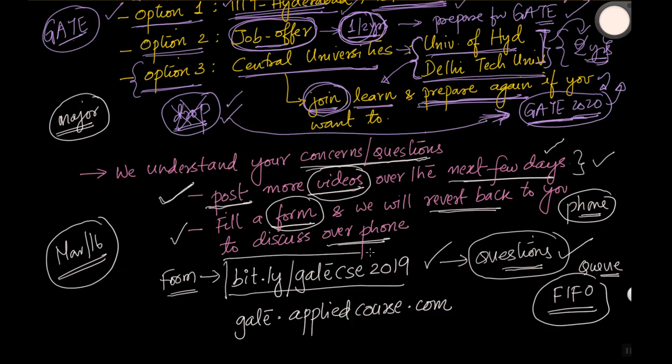So please go to this link, very simple link to remember bit.ly/gateCSE2019 and you could also go to our website where some of this information is present gate.appliedcourse.com and please fill in the form so that we can try and answer as many students questions as possible and when we try to, if we have your question clearly written, we will come prepared with answers instead of thinking of answers on the fly. And please share this link with your friends also. Please share this link with your friends who require this counseling and mentorship and help from us.